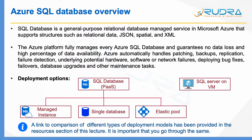The second option is Single Database. You can deploy a single database on Azure with its own set of resources managed via Logical Server. And you have Elastic Pool, which is basically a pool of databases with a shared set of resources managed via Logical Server. I'm going to explain Logical Server and Elastic Pool in more detail in the further part of this lecture.